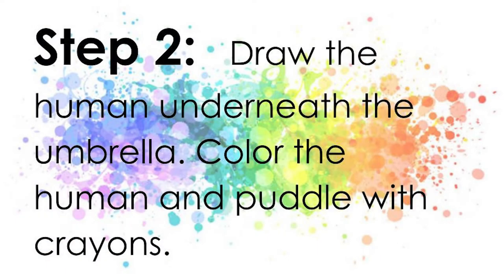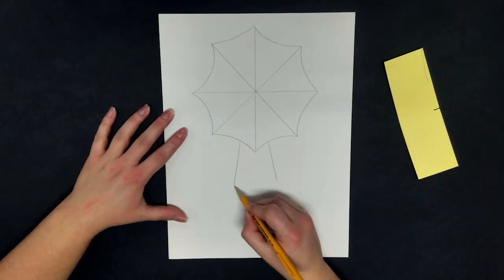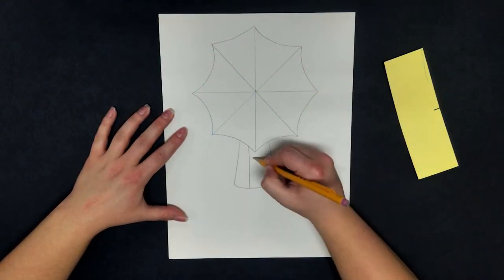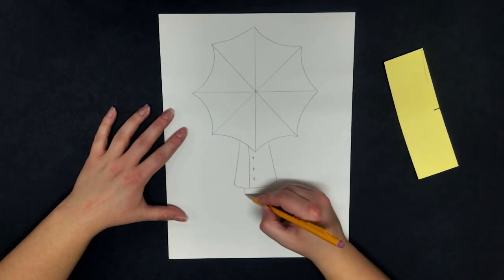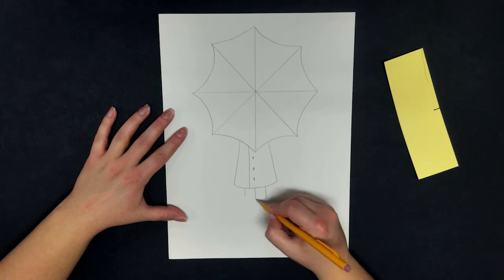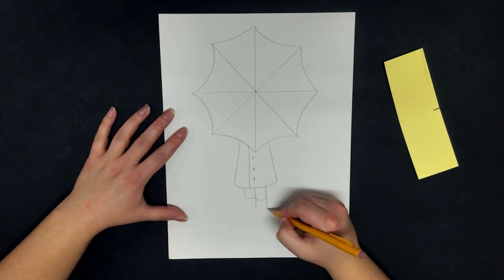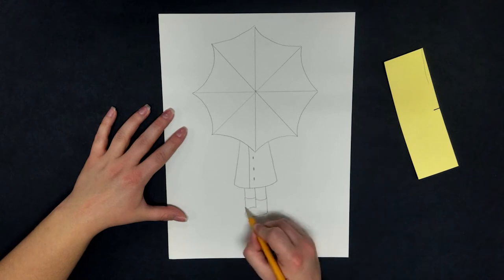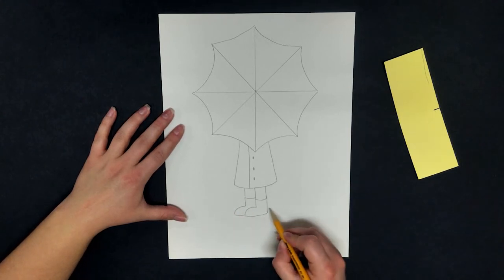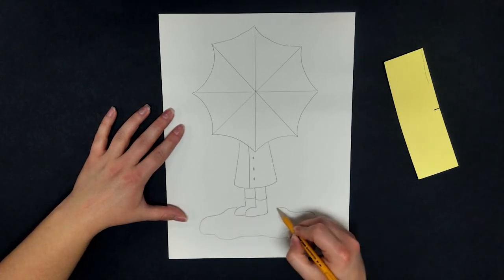In step two, we're going to draw the human underneath our umbrella. I am drawing a simple human underneath with a raincoat on and boots. Make sure to pause the video if you need to follow along. Don't forget that your puddle is an oval shape, but it's kind of a wiggly oval shape.